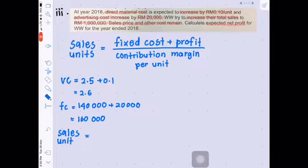To get sales unit, you divide RM1,000,000 with selling price RM5 per unit. So the total sales unit is 200,000.